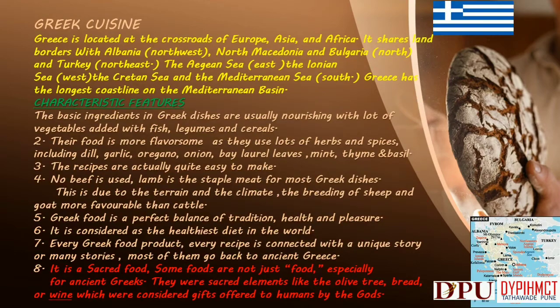Greek Cuisine — Location: Greece is located at the crossroads of Europe, Asia, and Africa. It shares land borders with Albania to the northwest, North Macedonia and Bulgaria to the north, and Turkey to the northeast. The Aegean Sea lies to the east, the Ionian Sea to the west, and the Cretan Sea and the Mediterranean Sea to the south. Greece has the longest coastline on the Mediterranean Basin.